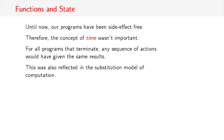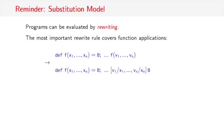Let's quickly remember what that model was. In the substitution model, programs can be evaluated simply by rewriting the program text. There are a number of rules. The most important rewrite rule covers function applications. It says that if you have a function definition, say a function f with parameters x1 to xn and body b, and then later on you have a call of the same function f with actual values v1 to vn, then the program can be rewritten by replacing the call by the body of the function b, where all the formal parameters x1 to xn are at the same time replaced by the actual values v1 to vn.